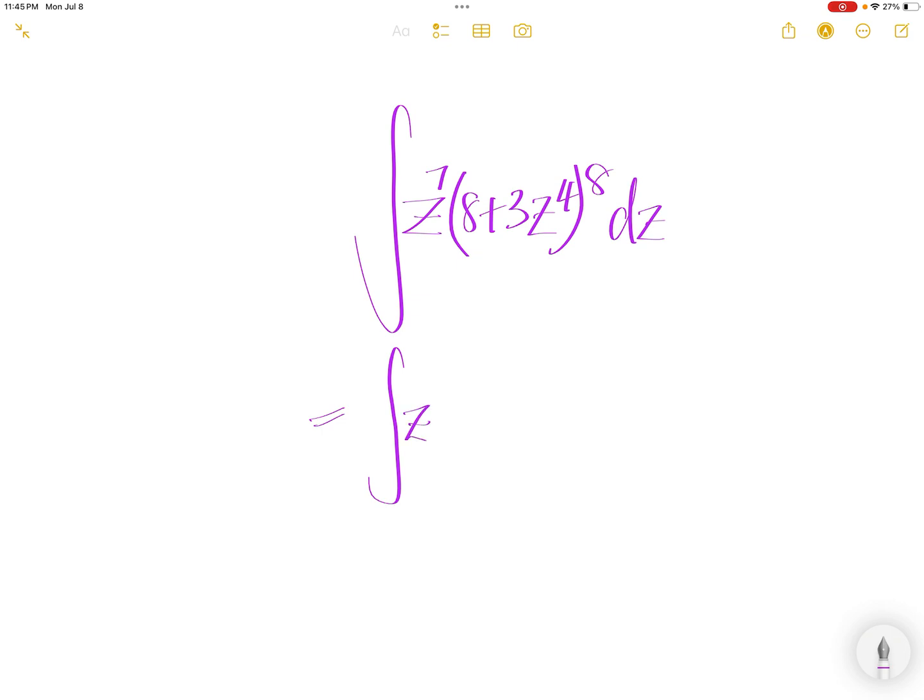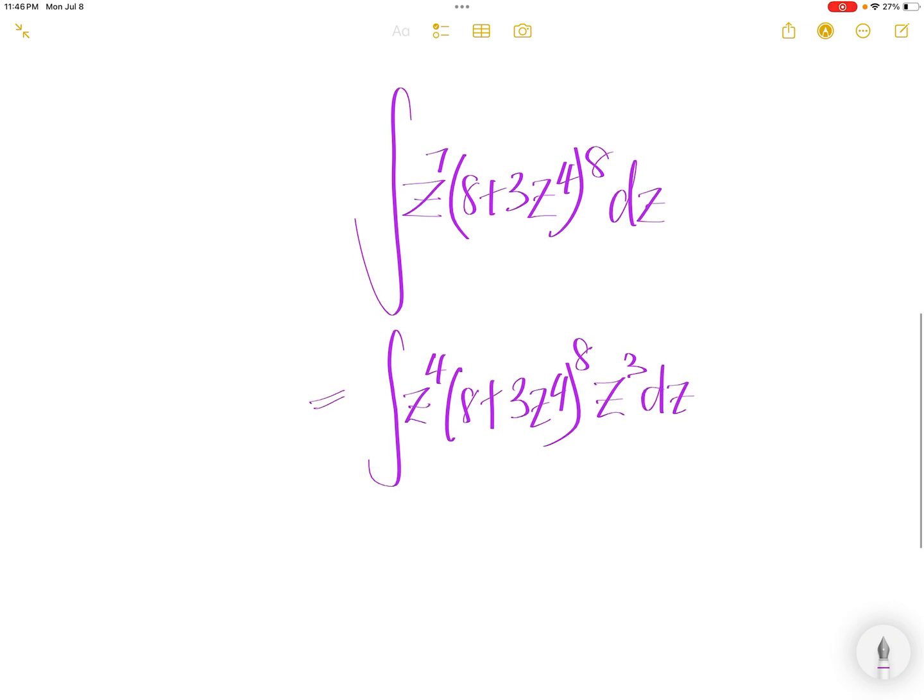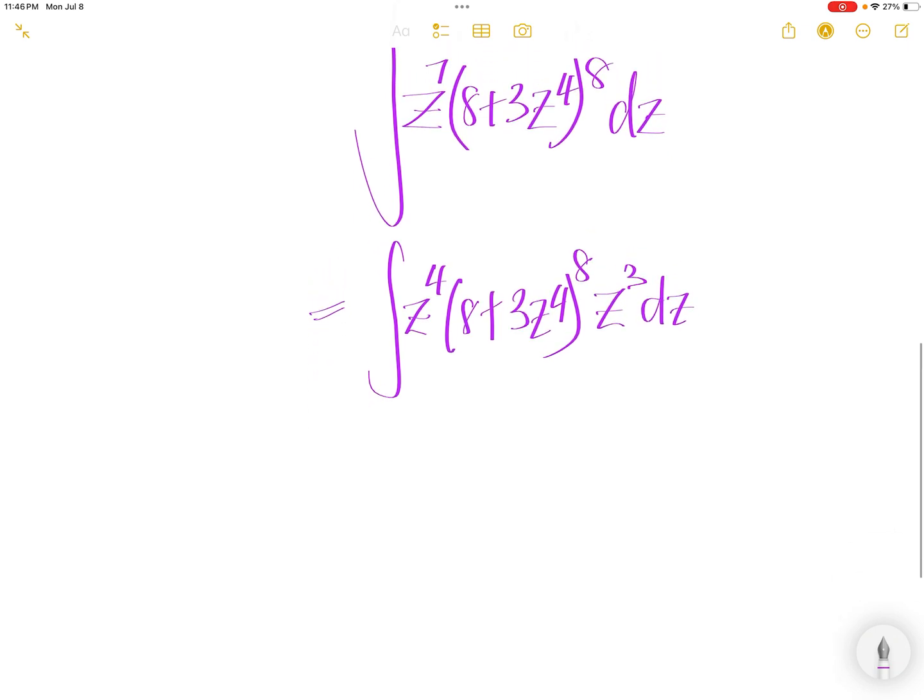First, we are going to pull z to the power of 3 out, so you get z to the power of 4 here, 8 plus 3z to the power of 4, to the power of 8, z to the power of 3, dz.